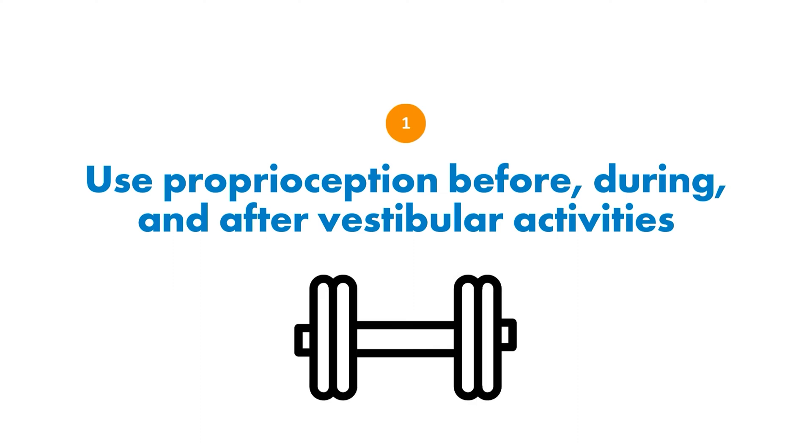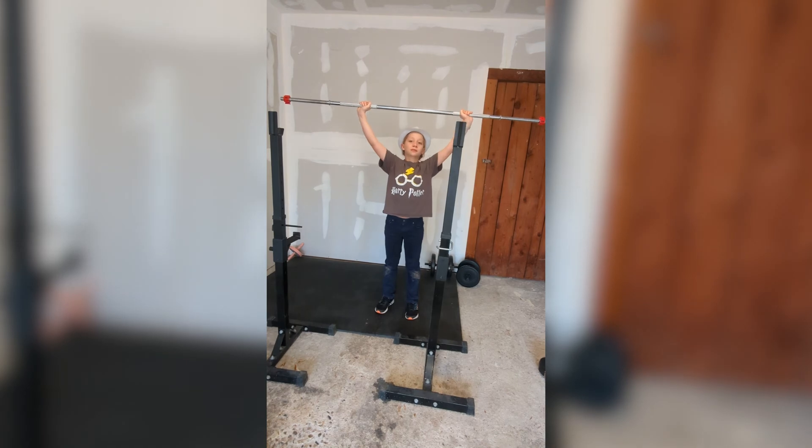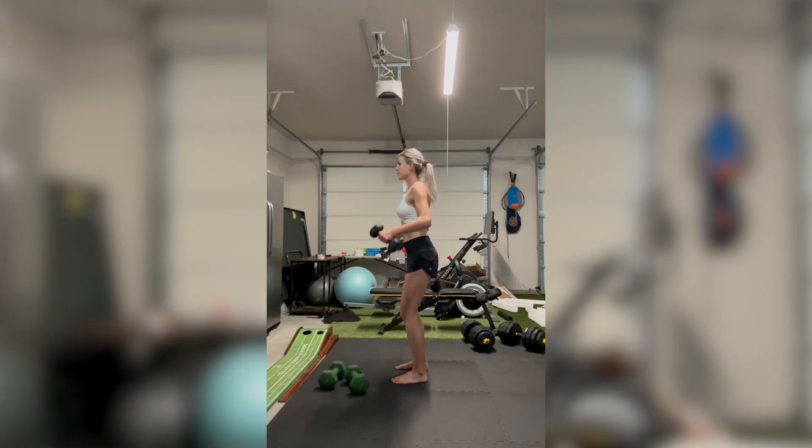We're going to give you three things you can do if your child is struggling with this, or if you yourself are struggling — if you think you have a retained Moro reflex and are struggling with vestibular processing. If you have a retained Moro reflex, you likely are struggling with vestibular processing and vice versa. The first recommendation is to use proprioception — proprioceptive-based activities before, during, and after vestibular activities. These are activities that work the joints and muscles: heavy work, pushing, pulling, lifting, carrying heavy items, deep pressure such as massage, deep bear hugs, or using a weighted blanket. These strategies are calming to the nervous system — use them before a car ride if you get motion sickness, or before and after playing at the park to help decrease sensory overload.